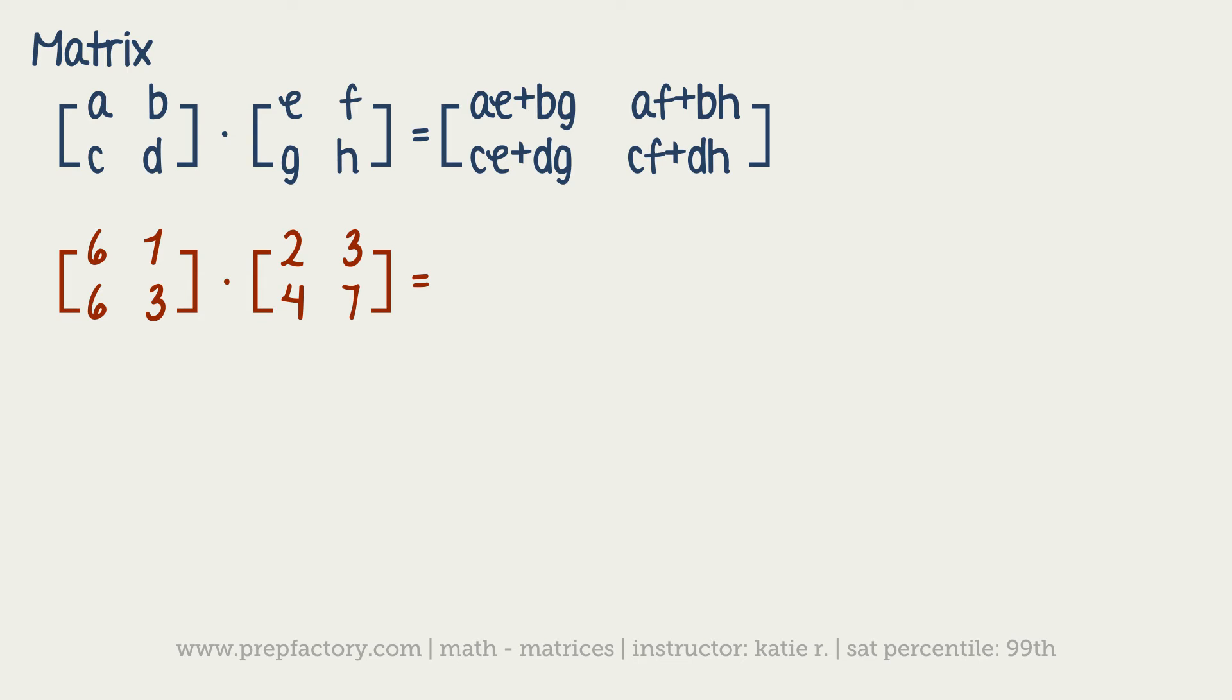First things first, save space. We're going to take our first row and multiply it by our first column. We've got 6 times 2—that's part of our first row and first column—plus 1 times 4. That would be our first number at the top left.